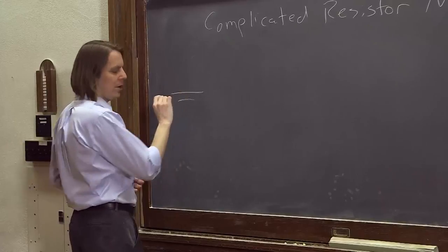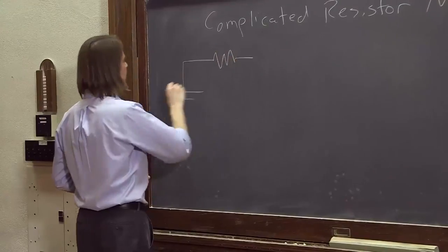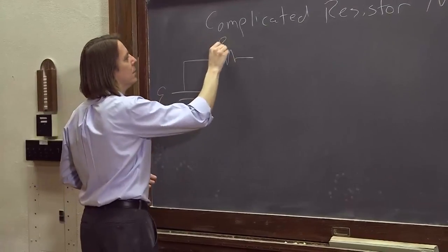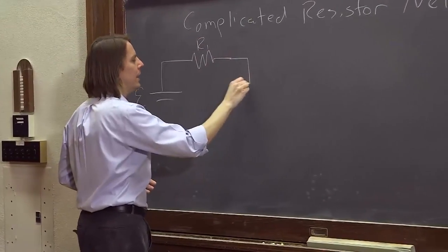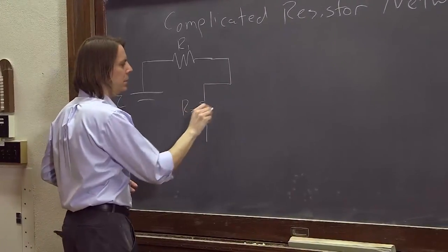Work our way through it by thinking about series and parallel. Say we got some EMF out here, resistor 1 here. And that splits into a branch that has resistor 2 here,